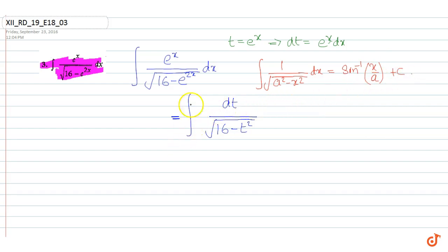So applying this formula, our integral becomes: here a equals 4, so we write sin inverse of t over 4 plus c.